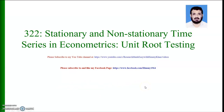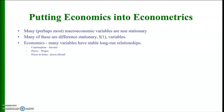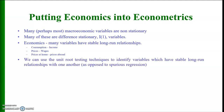Let me start with the definition once again. Most macroeconomic time series are non-stationary at level. However, 97% of them are stationary at the first difference, that is, they are integrated of order 1. In economics, many variables have stable long-run relationships like the relationship between consumption and income, prices and wages, prices at home and prices abroad. So we can think of co-integration among various series.